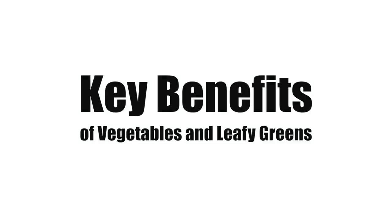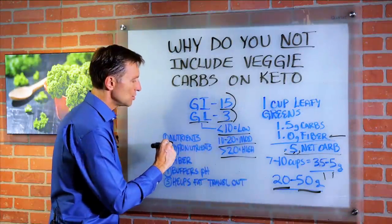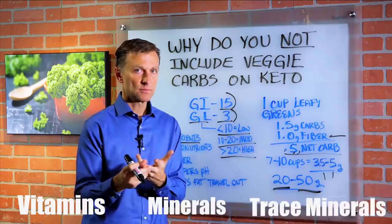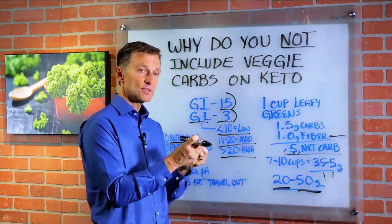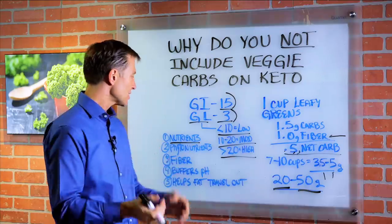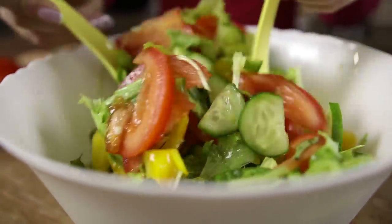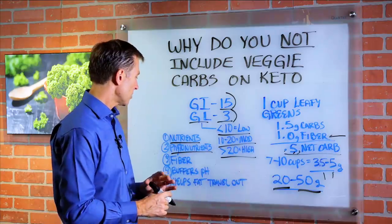Let's talk about some key benefits of vegetables and leafy greens in a keto plan. Number one, they provide the main nutrients — vitamins, minerals, and trace minerals. It's very difficult to get all of your nutrients just from meat, so we want to add the vegetable family. They also provide phytonutrients — additional nutrients like carotenoids and beta-carotene — that add benefit to the body, plus antioxidants. Very important.